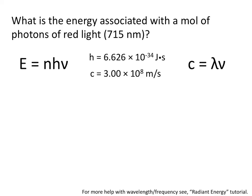Using the equation c, which is the speed of light, equals the wavelength times the frequency. So the first thing we need to do in this problem is to solve for the frequency of red light at 715 nanometers.